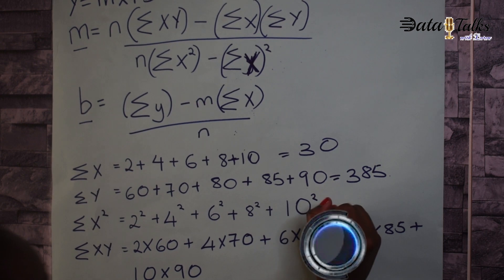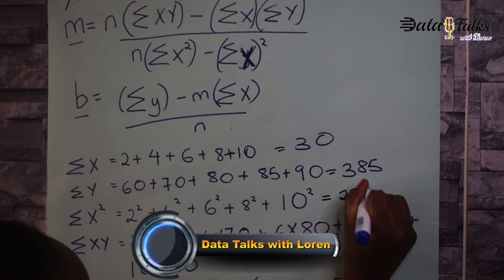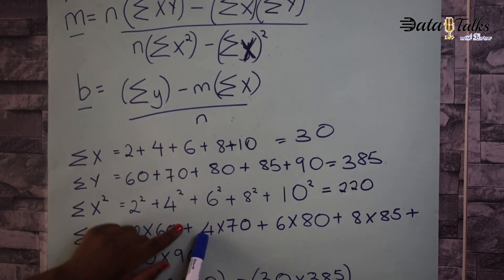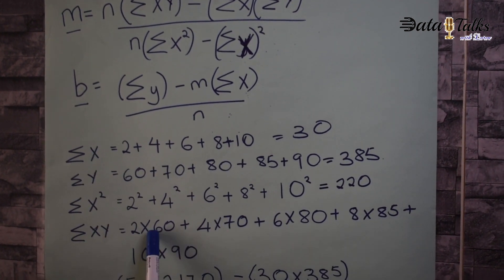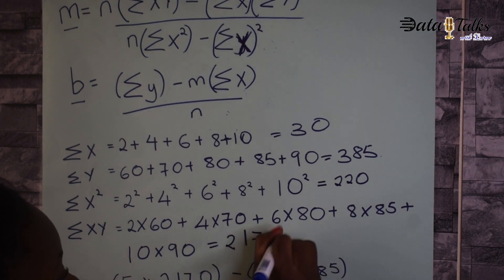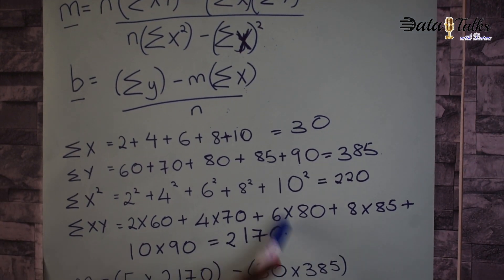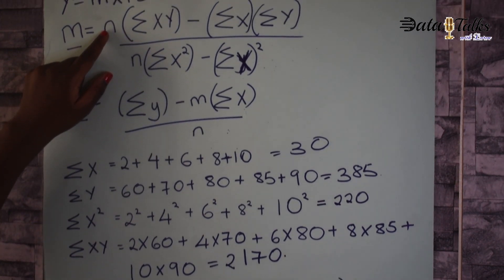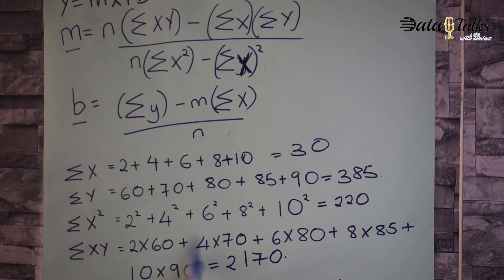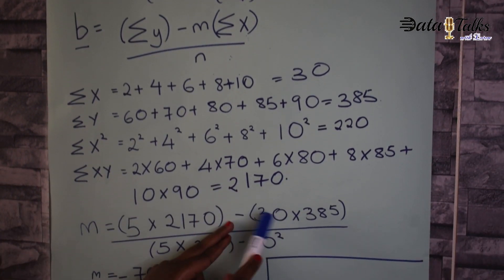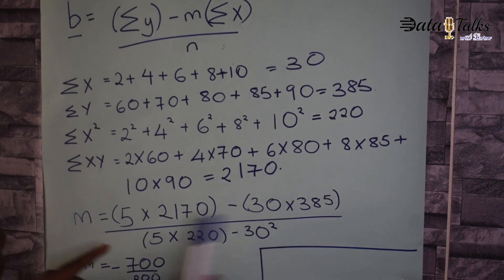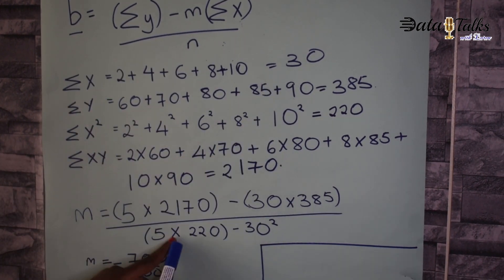The summation of x-squared amounts to 220. For x times y: 2×60=120, 4×70=280, and so on — the total summation of x·y amounts to 2170. Substituting into the formula: 5 (number of entries) times 2170, minus 30 (summation of x) times 385 (summation of y), divided by 5 times 220 minus 30 squared.